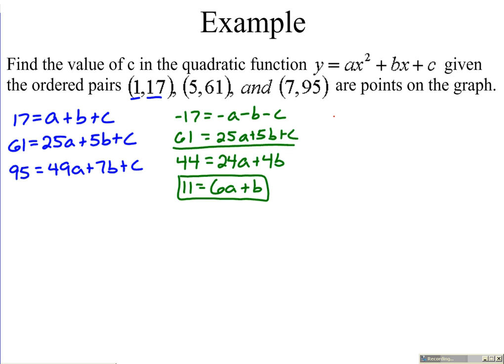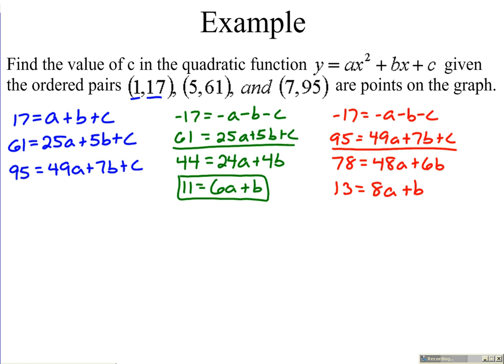There's one equation now in terms of only a and b. We want to get a second equation now in only terms of a and b. I'm going to use this top equation again after we multiplied it by negative 1, but now I'm going to combine it with the third equation. 95 equals 49a plus 7b plus c. 95 equals 48a plus 6b. C's again drop out. From here, we can divide everything by 6.